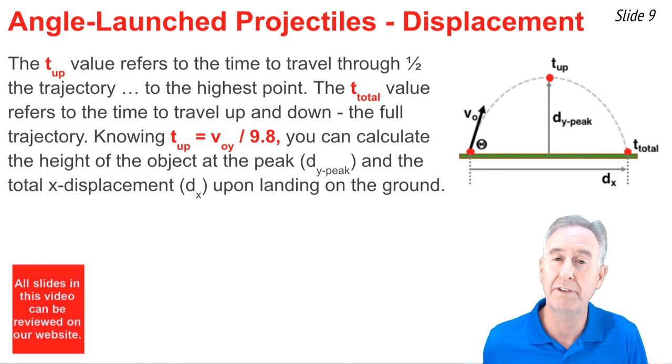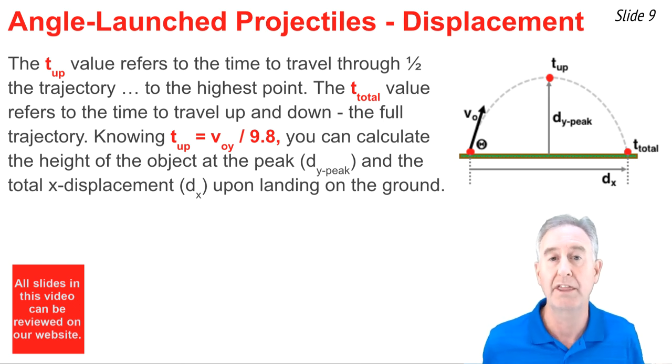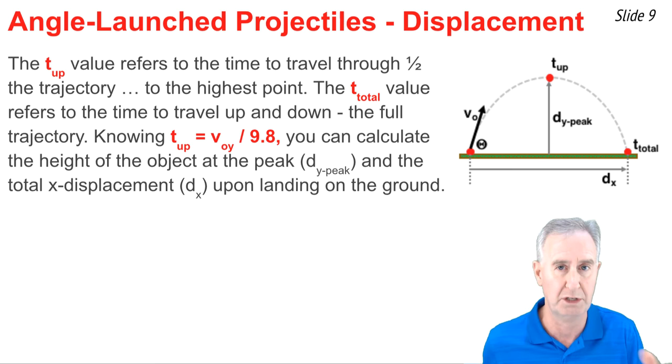Knowing that the time up equal the V original y divided by 9.8, we can calculate two important displacement values. The height at the highest point, which is what I call the dy at the peak position at the halfway time point, and the total horizontal displacement, that is the dx after the t has reached t total.